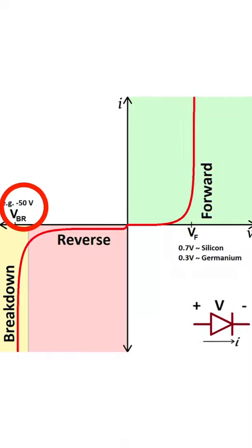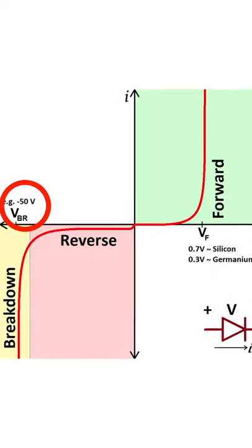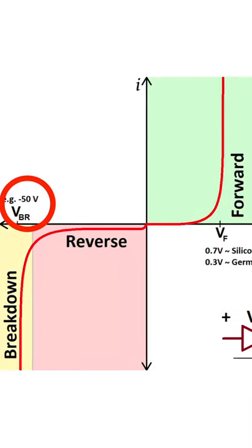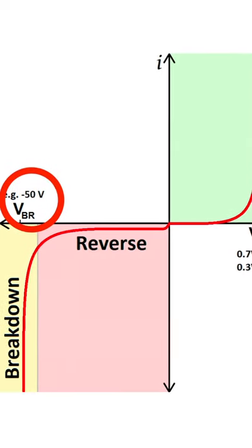This reverse threshold voltage is known as breakdown voltage. A typical breakdown voltage varies from minus 50 volt to minus 100 volt.